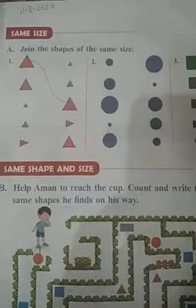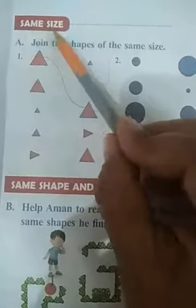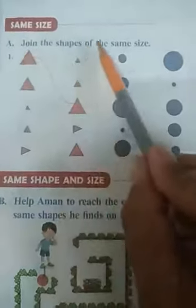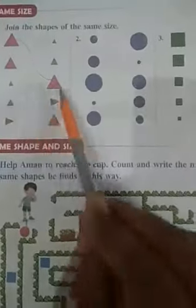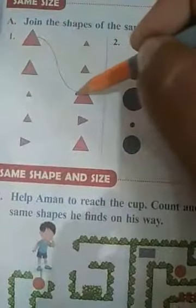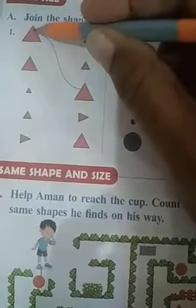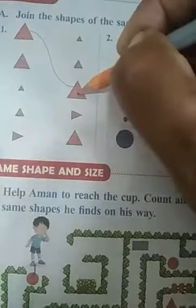Children, today we will start with page number 51. First of all, write today's date: 11.8.2020. Read: Same size. Join the shapes of the same size. Here you can see different shapes are drawn with different sizes. We have to join the shapes of the same size. The first one is done. For example, this is a triangle shape, and both are of the same size.